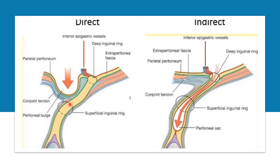This diagram shows a direct hernia, where the hernia bulges through the weakness in the posterior abdominal wall medial to the inferior epigastric artery, then exits at the superficial inguinal ring into the scrotum. On the right, an indirect hernia exits and enters the inguinal canal through the deep inguinal ring, which is located lateral to the inferior epigastric artery and vein, then continues down the inguinal canal and exits at the superficial inguinal ring into the scrotum.